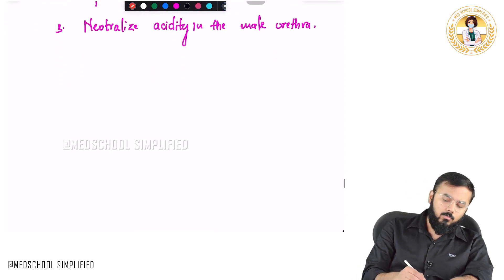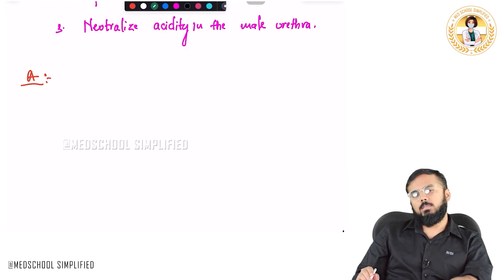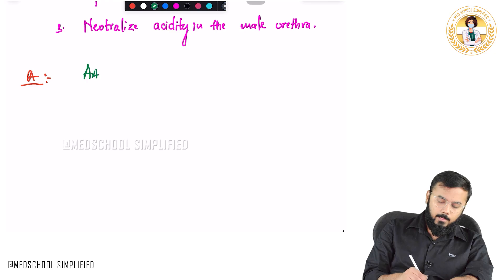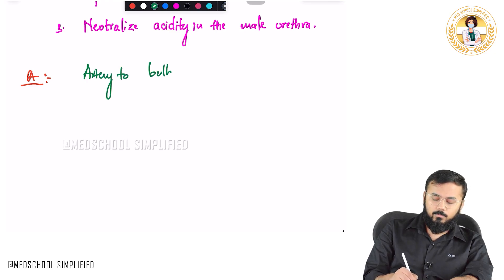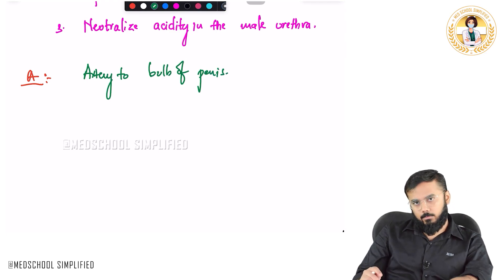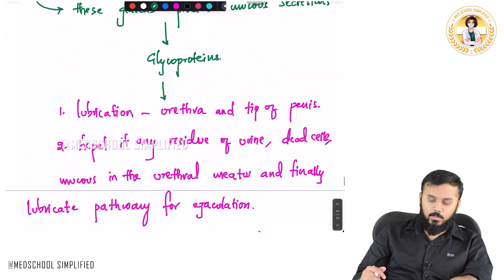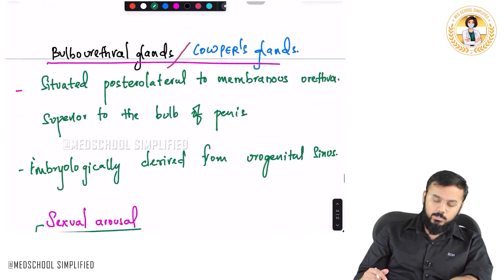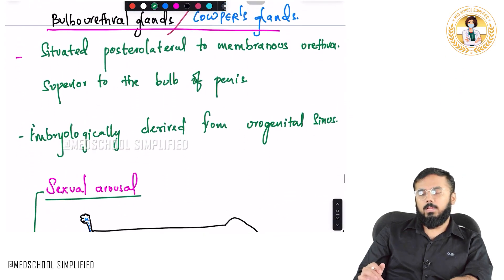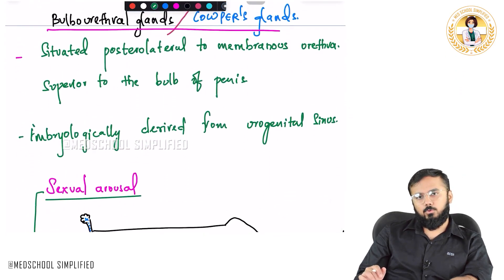Coming to the arterial supply — there is only one artery, called the artery to the bulb of the penis. This is an important structure. This is all you need to know regarding the bulbourethral glands, also called Cowper's glands. Thank you so much for watching. Goodbye.